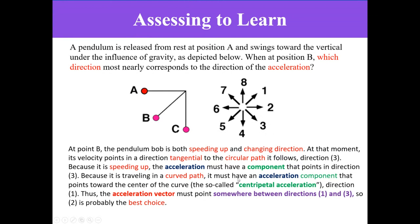Because it's traveling in a curved path, it must have an acceleration component that points toward the center of the curve, which we call the centripetal acceleration. So direction one would be the other acceleration. Thus, the acceleration vector must point somewhere between one and three, which is direction two. Any question about this problem?